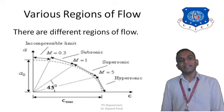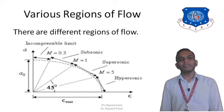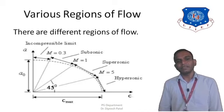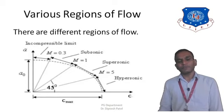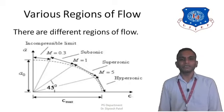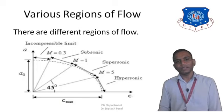In this slide we are going to learn the different regions of flow. Basically there are six different regions to be understood and we are going to see them one by one. The different regions are: incompressible flow, subsonic flow, sonic flow, supersonic flow, hypersonic flow, and transonic flow regions.